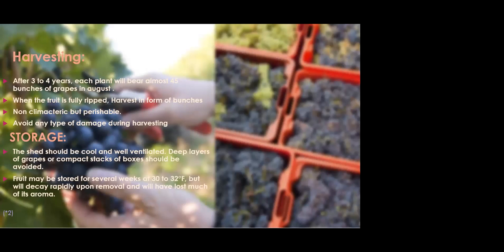Harvesting: after 3 to 4 years, the vine starts bearing fruit if grown from new plants. If grown from cuttings or canes, bearing starts earlier. Damaged or old wood is removed each season to maintain productivity.